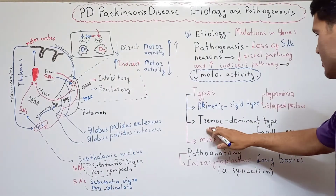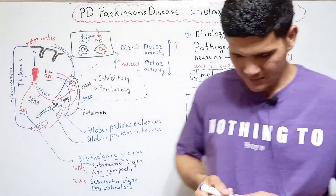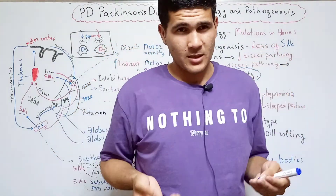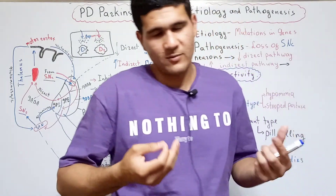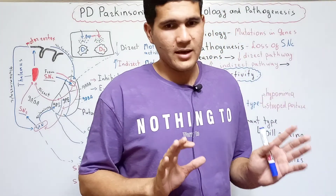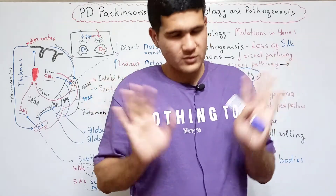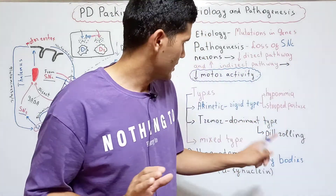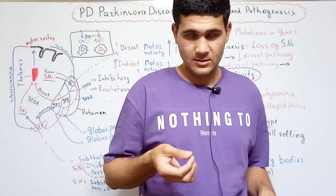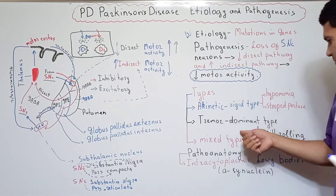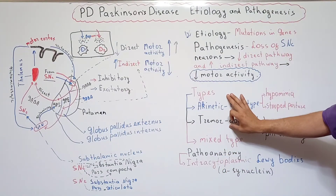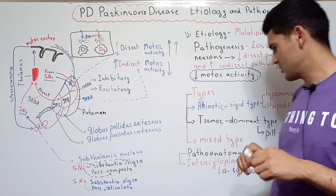The next type is the tremor dominant type. Tremor means regular and unwanted muscle contraction — maybe 60 times per minute — that is involuntary. The pill-rolling tremor is characteristic of this type. The third is the mixed type, which means a combination of the first two types: akinetic rigid type and tremor dominant type.